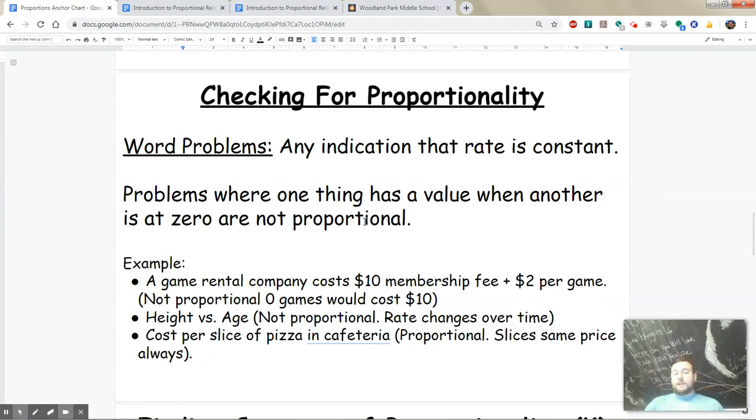But if you say the cost per slice of pizza in the cafeteria, that's proportional. It doesn't matter how many slices you buy—the price is always the same. If it's $2 per slice: one slice is $2, two slices is $4, three slices is $6. It's always $2 per slice. As long as the relationship is constant, you have a proportional relationship.